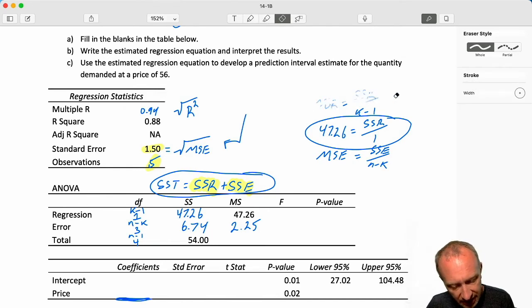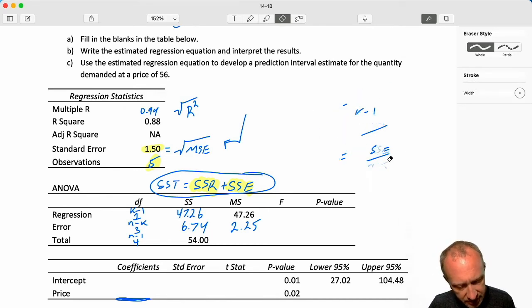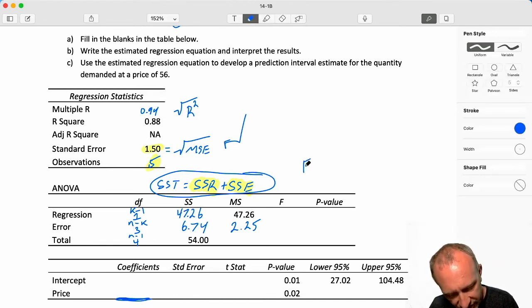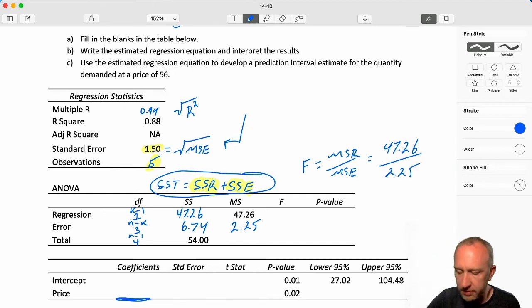Now we can get our F. Let me just clear this up. Our F statistics for this upper tail F test. MSR over MSE. So 47.26 over 2.25. 47.26 over 2.25. That's almost exactly 21.